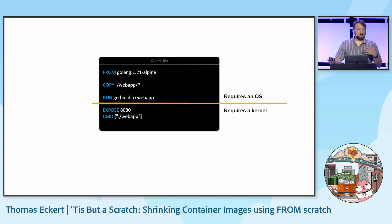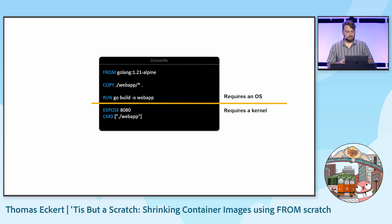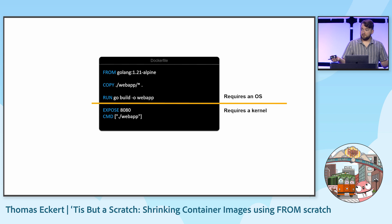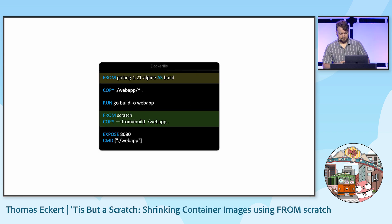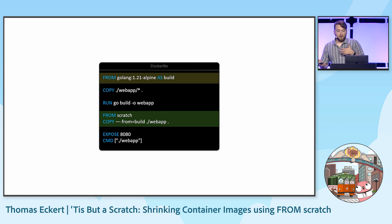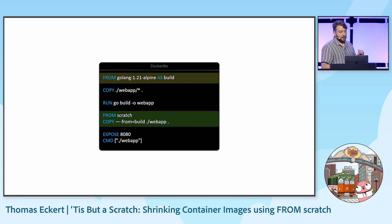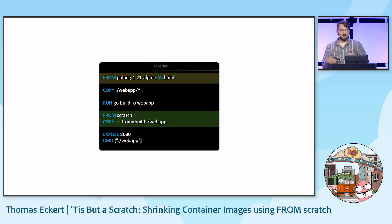So let's split the Dockerfile into two sections: the part that requires an operating system, and the part that only requires the host kernel to run. We still want an operating system with Go installed when we are building the binary, but once that binary is built, we no longer need Go or the operating system. Docker has a built-in way to separate a Dockerfile into stages, where only the final stage becomes the output image. The first stage will still be based on Golang 1.21 Alpine. The final stage, where we only need the kernel, will be based on an image called Scratch. We'll return to look at what that image is in a moment.